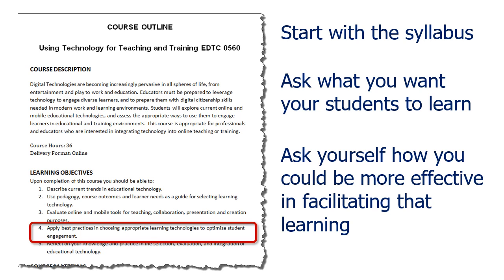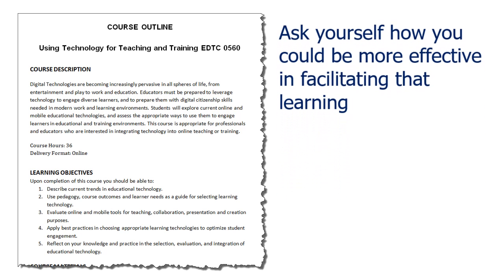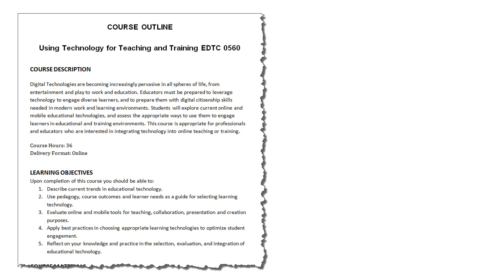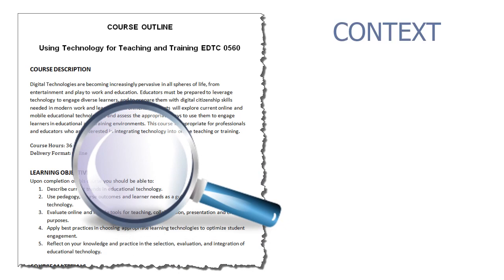Then ask yourself what you could do to be more effective in facilitating that learning. For example, in this sample syllabus from one of my courses, I can start from a specific learning objective such as: you should be able to apply best practices in choosing appropriate learning technologies to optimize student engagement. But our learning context does not just include learning objectives and proposed activities. The syllabus provides contextual information about not only the course itself, but also the program in which the course resides, the school, the institution, or the organization.